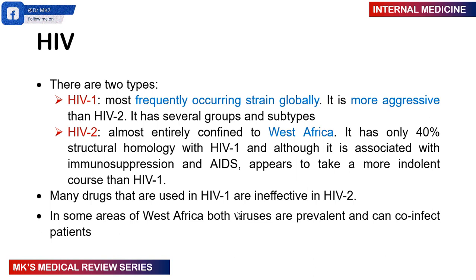There are two important types of HIV: type 1 and type 2. HIV-1 is by far the most common occurring strain globally. It is more aggressive than HIV type 2 and has many groups and subtypes. HIV type 2 is almost entirely confined to Western Africa, though we're now seeing cases popping up in different places. HIV-2 has about 40% structural homology with type 1, meaning 60% is quite different.